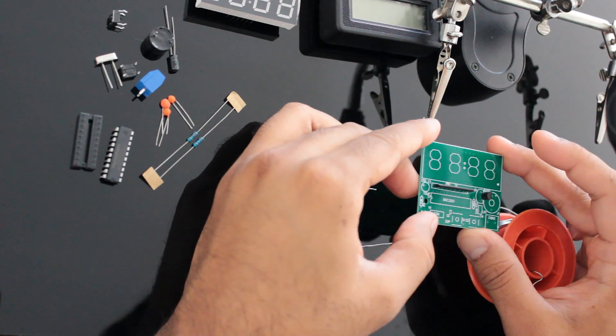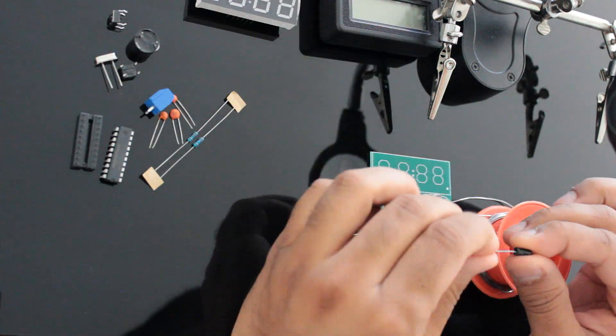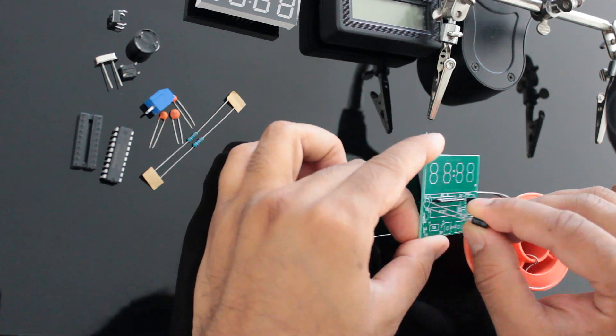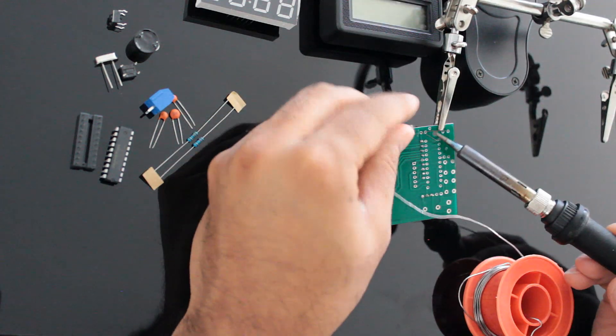Next I'm soldering the 10 microfarad capacitor. The positive terminal or the long leg of the capacitor slides into the hole that has a plus next to it.